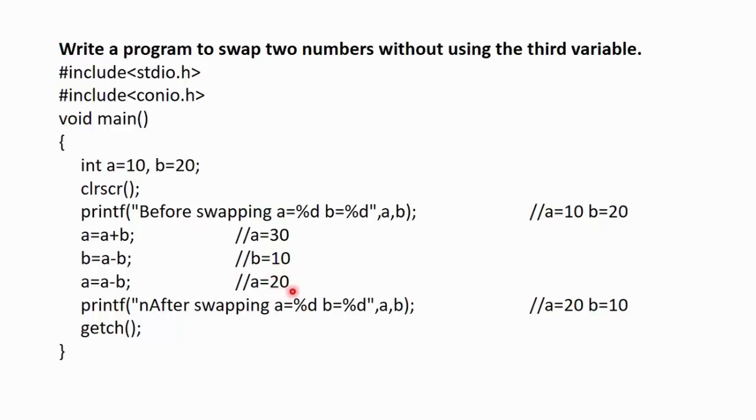So, the current value of a is 20 while that of b is 10 and this will be printed when this print statement is executed. Now, we can see that the values of a and b are swapped and no third variable is used.